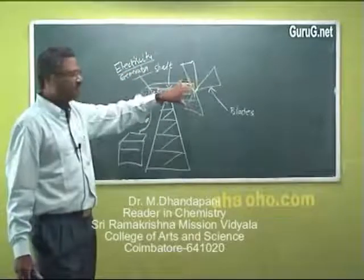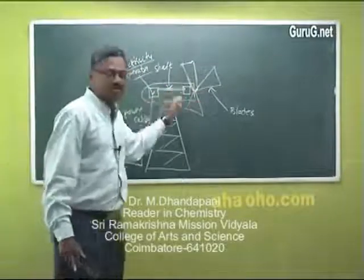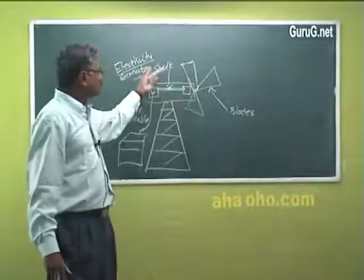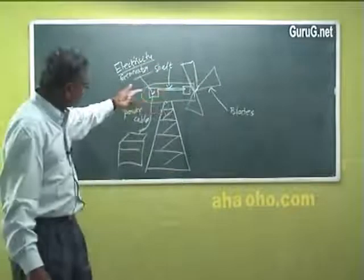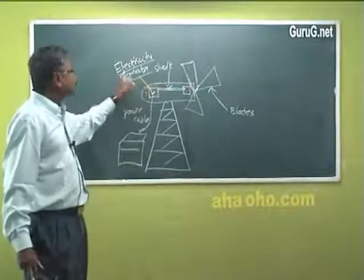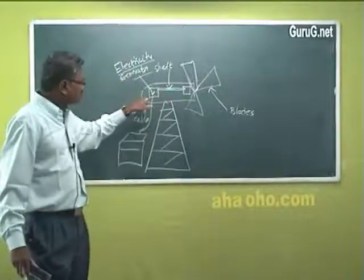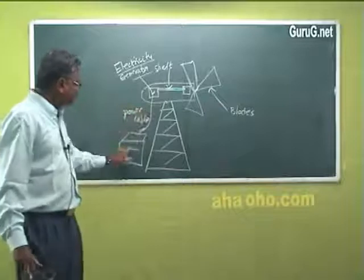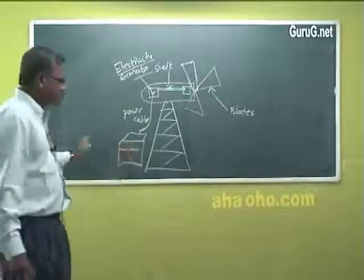Here wind energy, wind attacks the blades. The blades start rotating, while they rotate they also rotate the shaft. This shaft rotates the electrical, it really makes spinning electricity generator. Because of this electricity is produced. This electricity can be now brought to a power cable which can be transmitted.